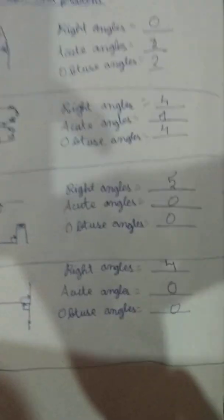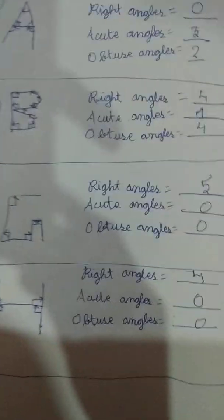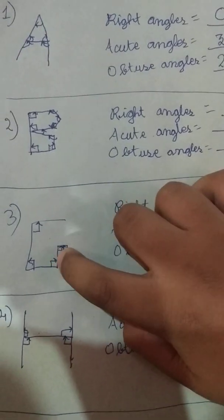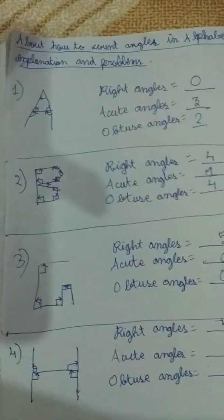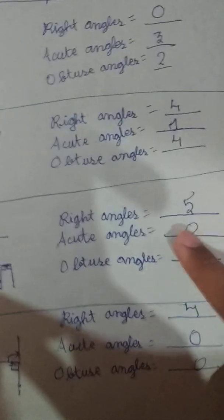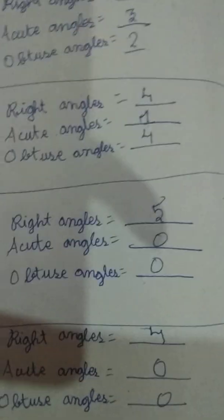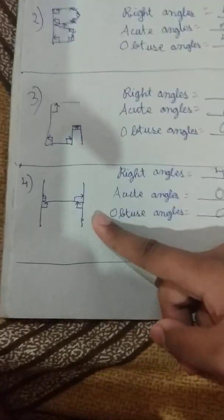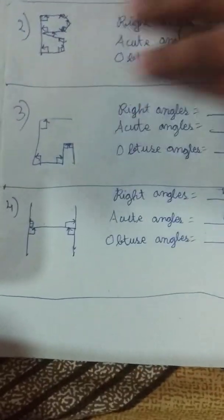Now let's see the G alphabet. How many right angles, how many acute angles, and how many obtuse angles does the G alphabet have? Let's count. This is one right angle, two right angles, three right angles, four right angles, and five right angles. And there are no acute and obtuse angles in G. So right angles: five; acute angles: zero; and obtuse angles: zero. I have written the G alphabet in straight lines only.